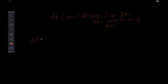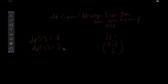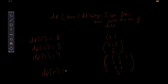So dp[1] is the number of ways to get sum equal to 1 — there's only one way, throw a 1 on the first turn. dp[2] has two ways: 1+1 or a 2 on the first turn. dp[3] has four ways as shown in the test case. Our final answer is dp[N].